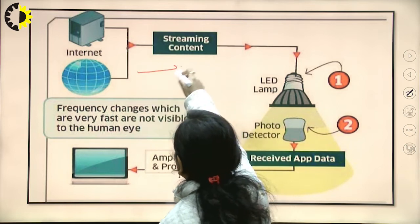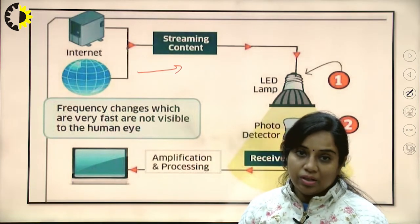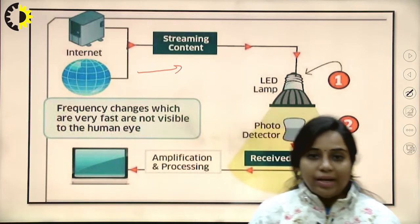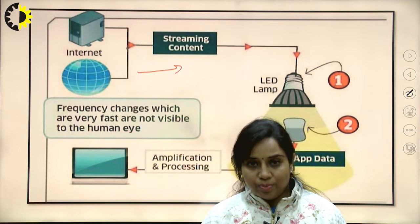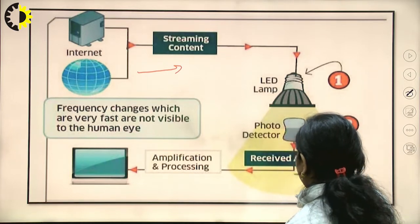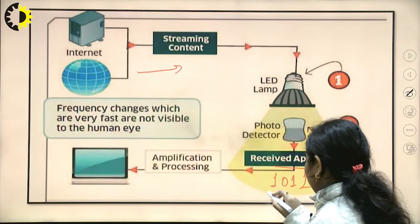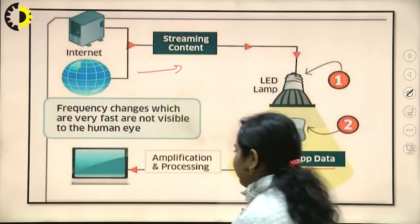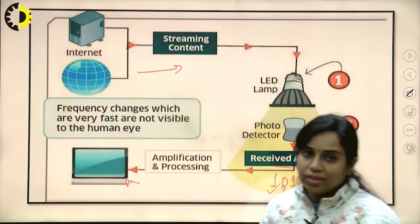There is internet with streaming content. A photo detector will detect the light and convert it into digital data — when the LED glows it transmits bit 1, and when it does not glow it transmits bit 0. That is the basic idea behind the photo detector. Here a photo detector receives application data (1, 0, 1, 1), which represents the LED glowing, off, then glowing twice. Amplification and processing takes place, and then the data is stored in the computer. This is the basic architecture of Li-Fi technology.